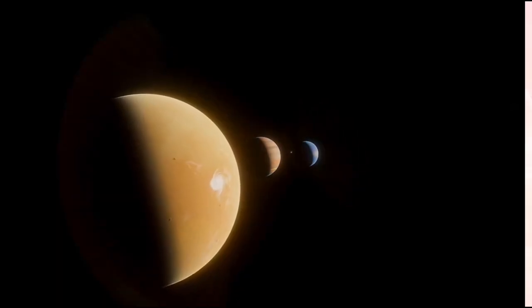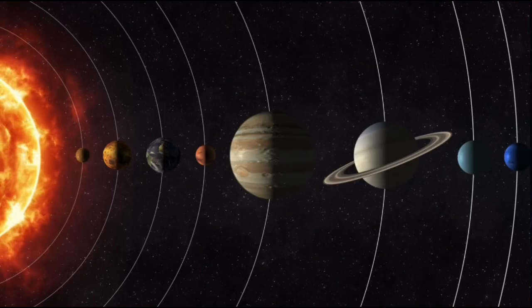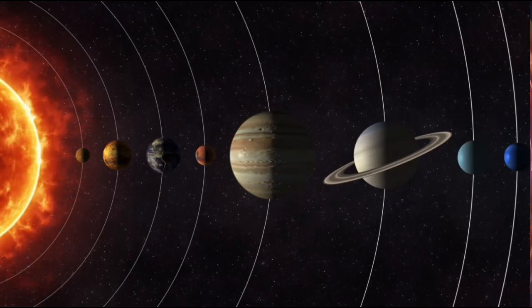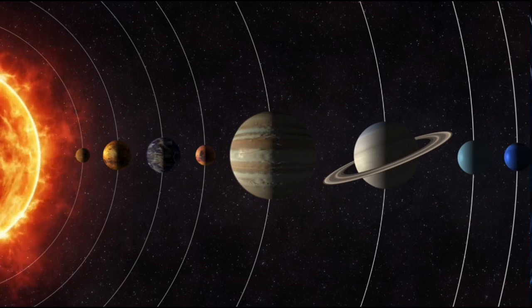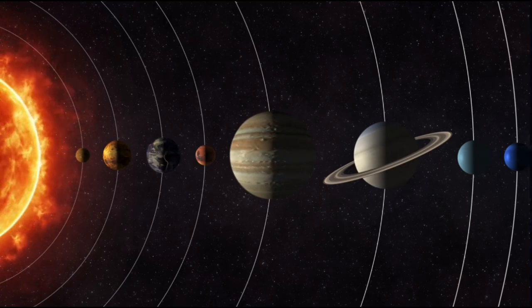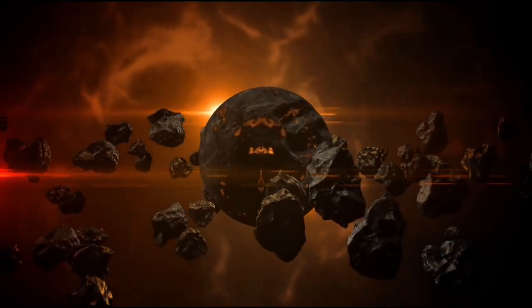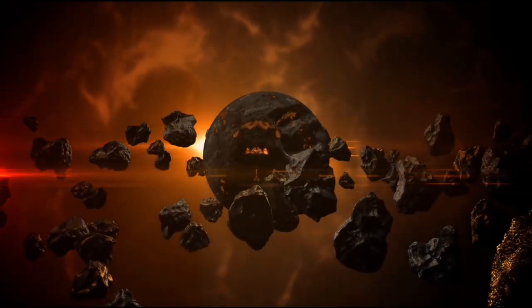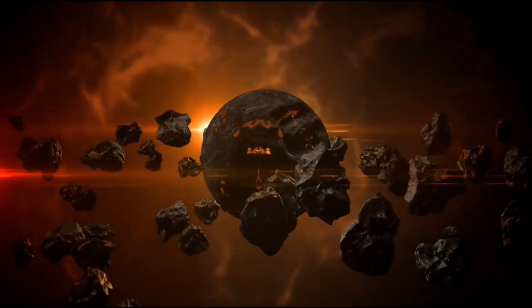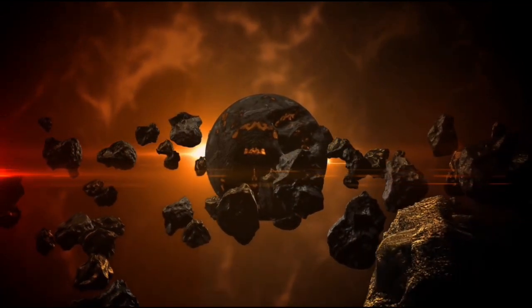Unlike our sun, Proxima Centauri is smaller, cooler, and emits much less light. Because of this, its habitable zone lies much closer to the star, placing Proxima b just 0.05 astronomical units away, roughly 20 times nearer than Earth is to the sun. This close orbit presents a unique array of complications for Proxima b and any hypothetical life it might support.